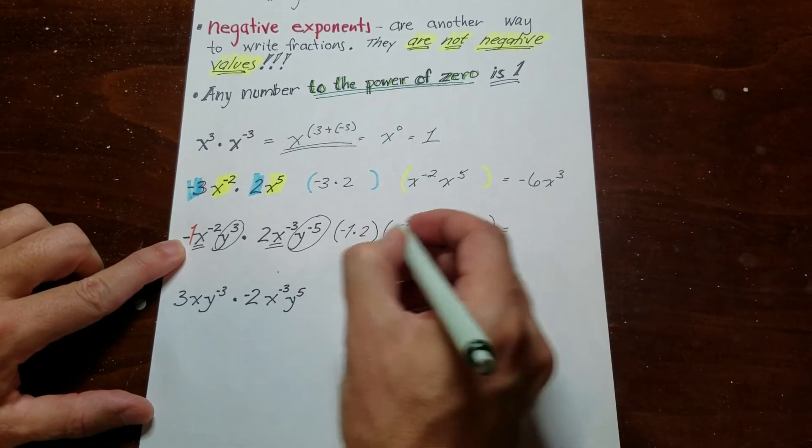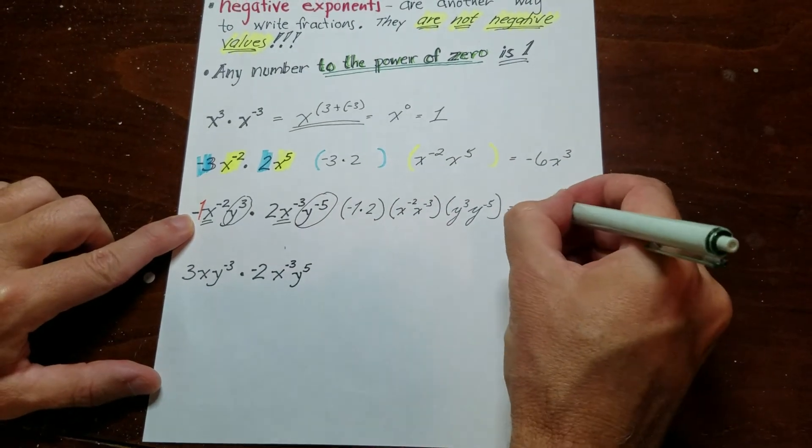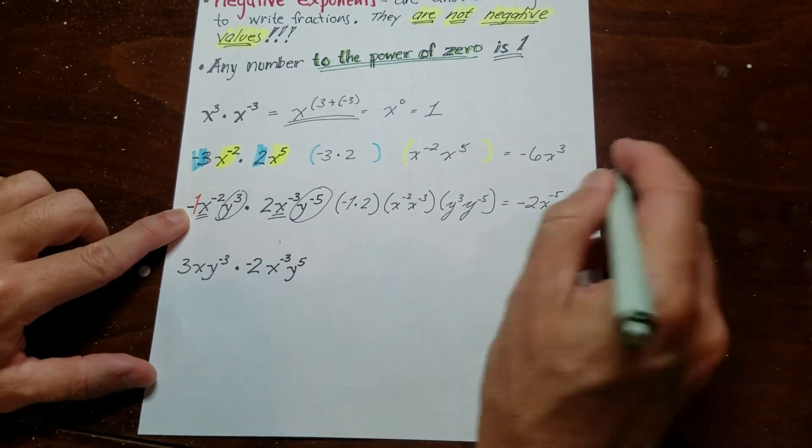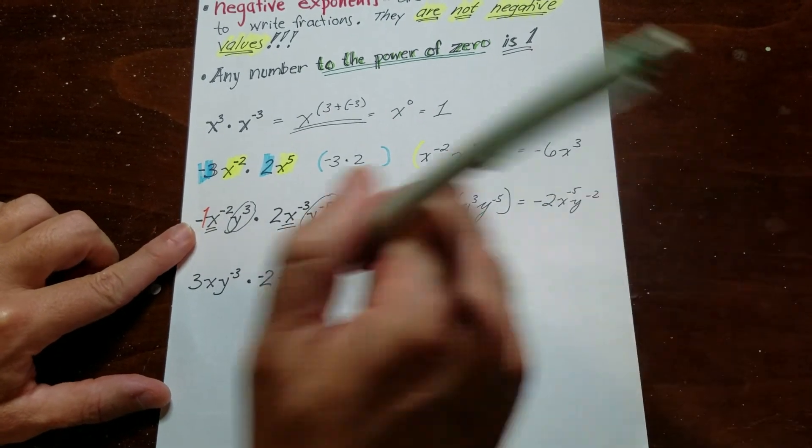So now this is negative 2. If we add these up, this is x to the negative 5, and then this is y to the negative 2.